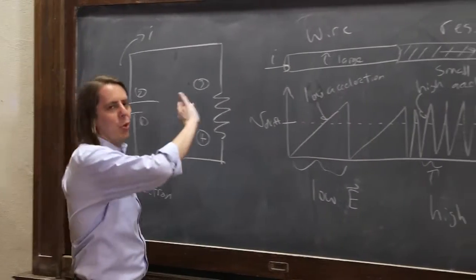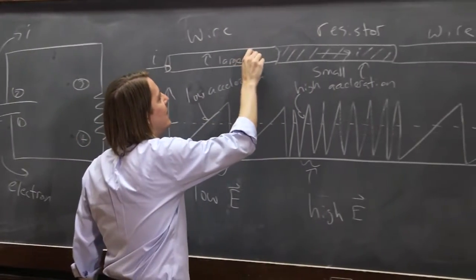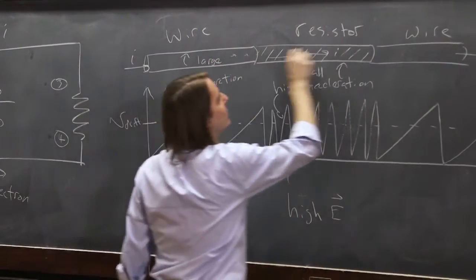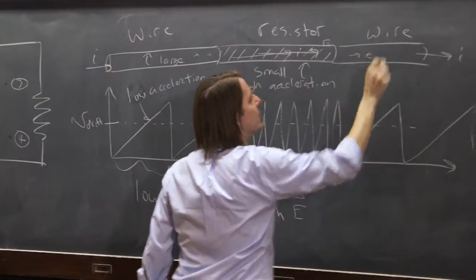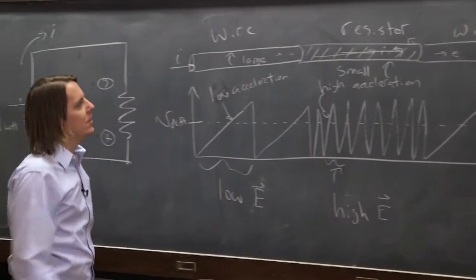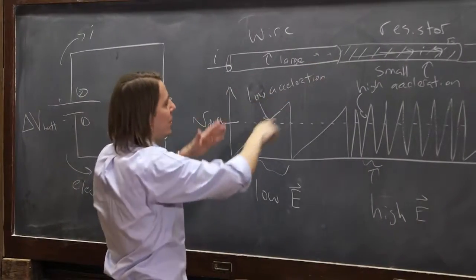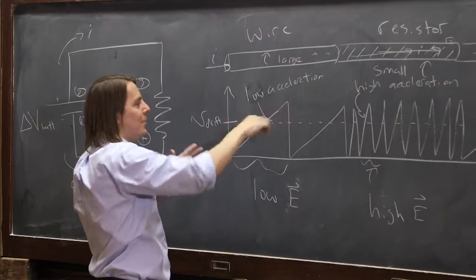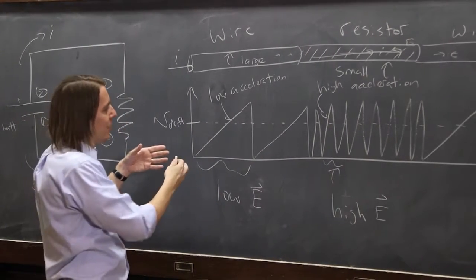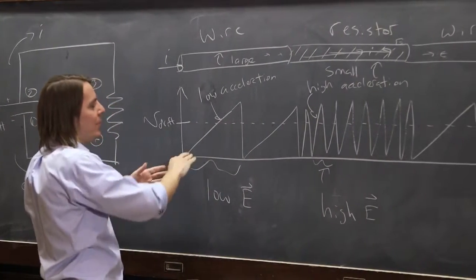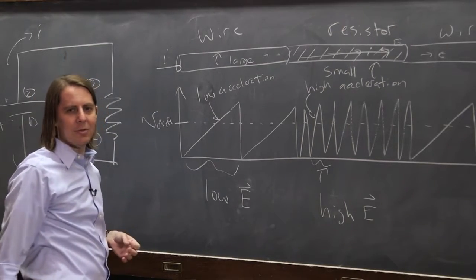So if you want to think about this, as you go through the wire, what's actually happening is you have a teeny electric field here. And you have a big electric field here. Then you have a teeny electric field again. You get a small electric field in the wire because it doesn't need a very big electric field to maintain the same drift velocity of the charge carriers. Because they hardly ever collide, just a little bit of electric field accelerates them really fast. And you don't need a big electric field.